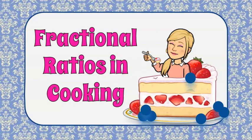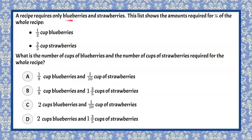Here's our question today. A recipe requires only blueberries and strawberries. The list shows the amounts required for one-fourth of the whole recipe. Here's the recipe: one-half cup blueberries, two-fifths of a cup of strawberries. And again, this list shows the amounts required for one-fourth of the whole recipe. This is one-fourth. You're asked, what is the number of cups of blueberries and the number of cups of strawberries required for the whole recipe?